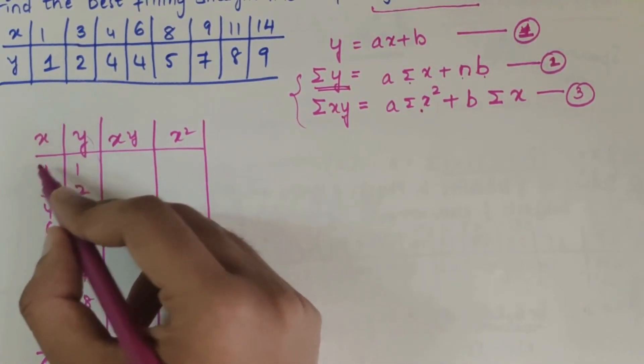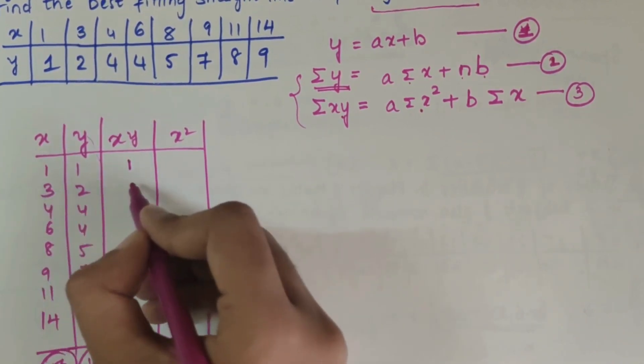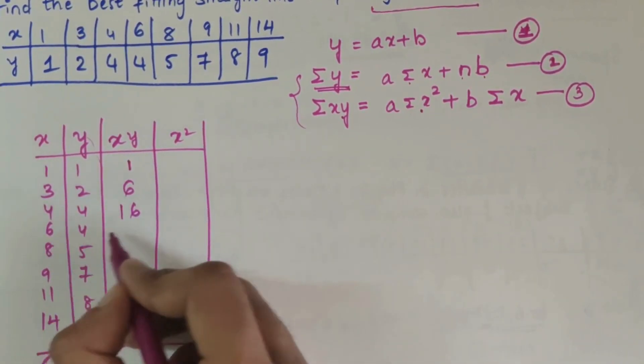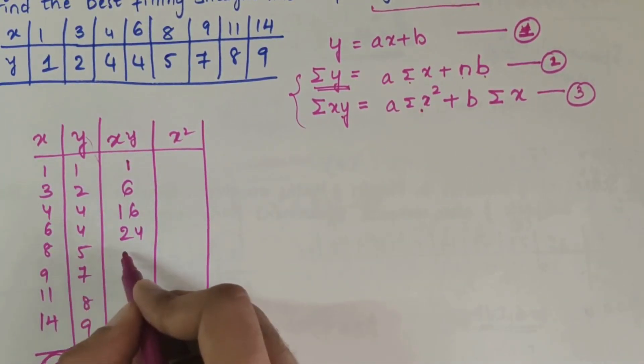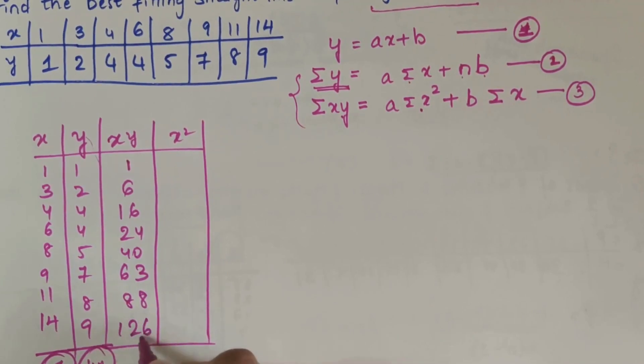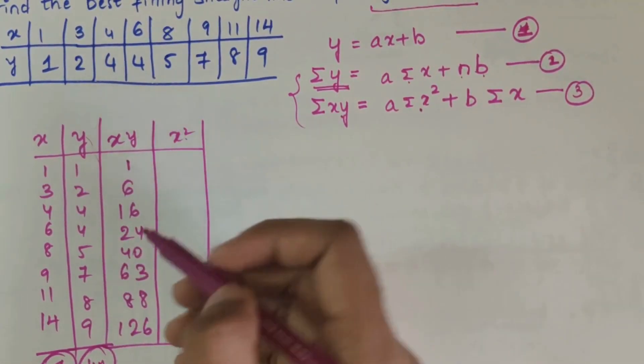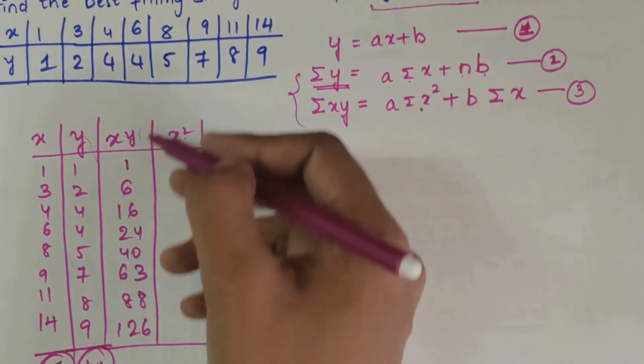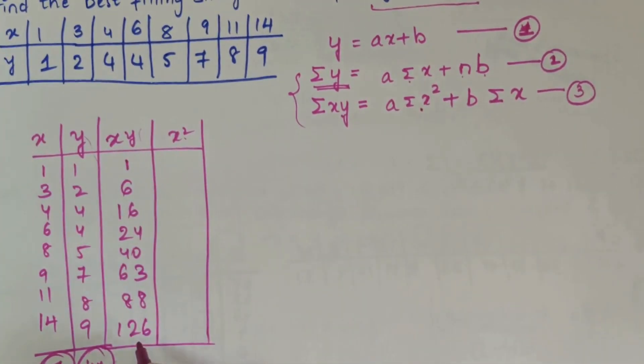So xy values: 1 times 1 is 1, 3 times 2 is 6, 4 times 4 is 16, 24, 8 times 5 is 40, 9 times 7 is 63, 11 times 8 is 88, and 14 times 9 is 126. Next we have to sum up all this. The sum is 364.